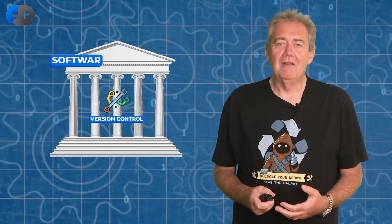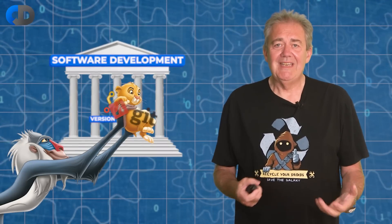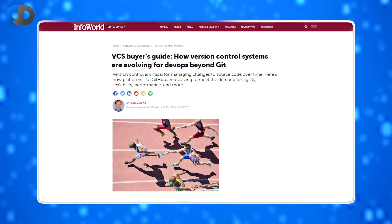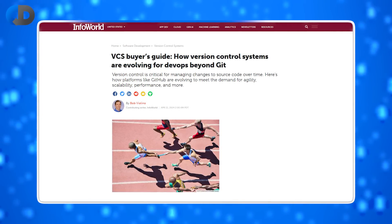Version control is a fundamental of software development and Git is the king of version control. In a recent post, online magazine InfoWorld asked the question, what comes next?